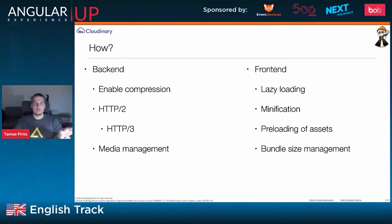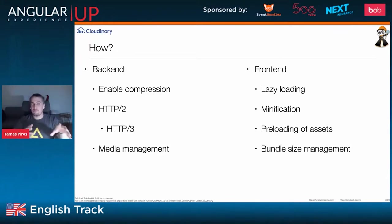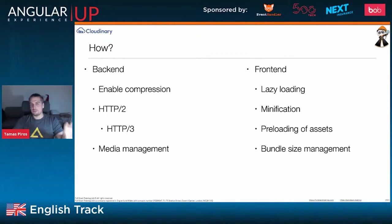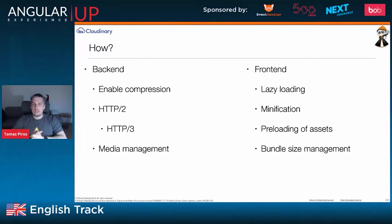I separate this into two parts. You have to work on backend components and also on frontend components. Depending on whether you're a frontend or fullstack developer with access to backend code, there are things you can do at the backend: enable compression like GZip and Brotli, use HTTP/2 or HTTP/3, and do appropriate media management — managing images and videos.